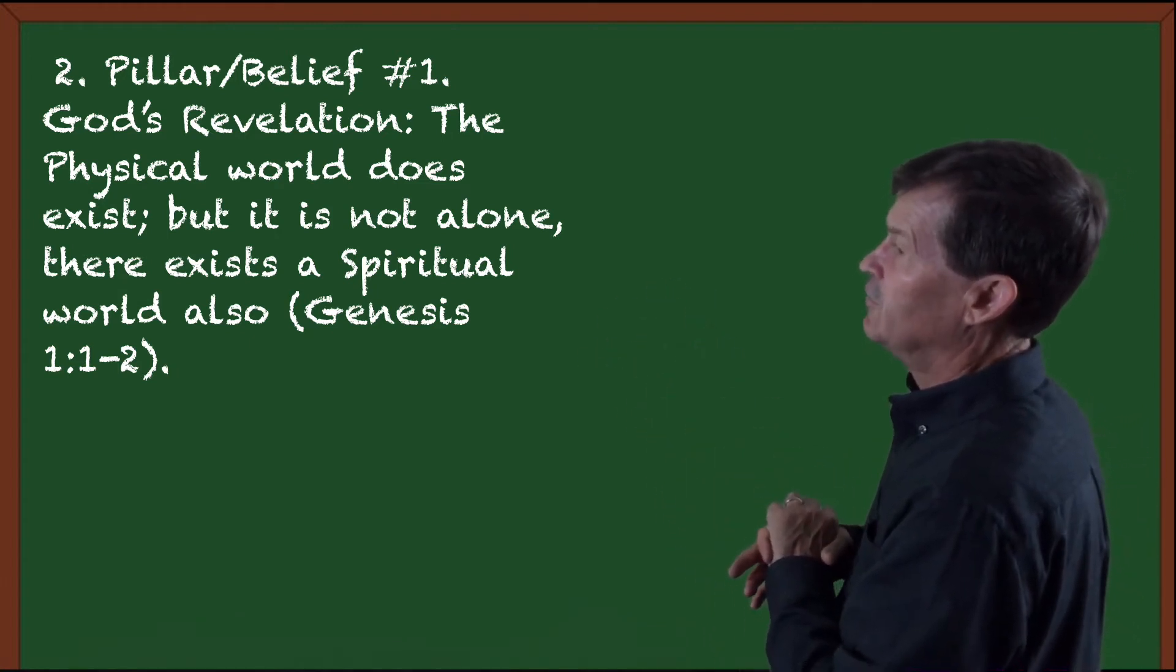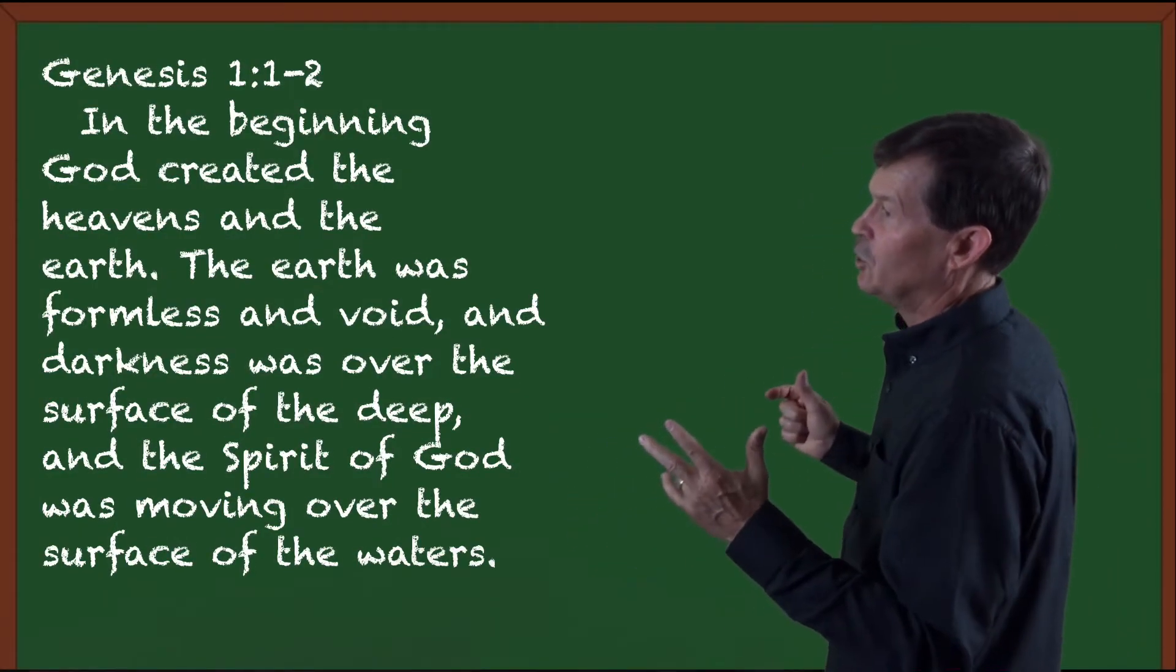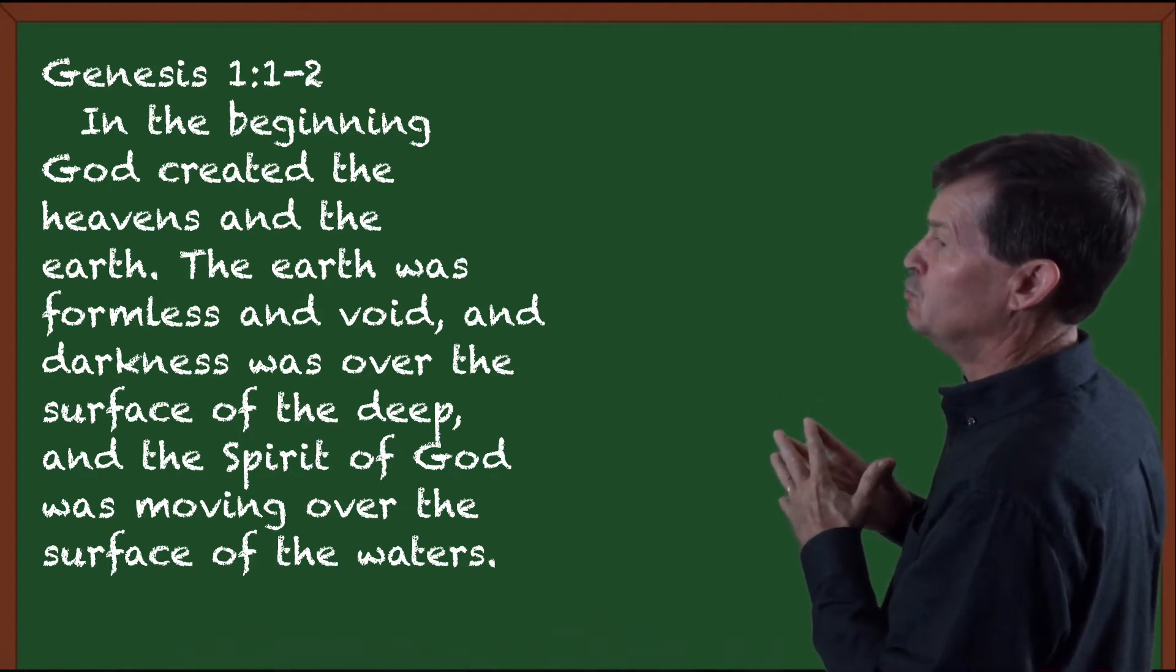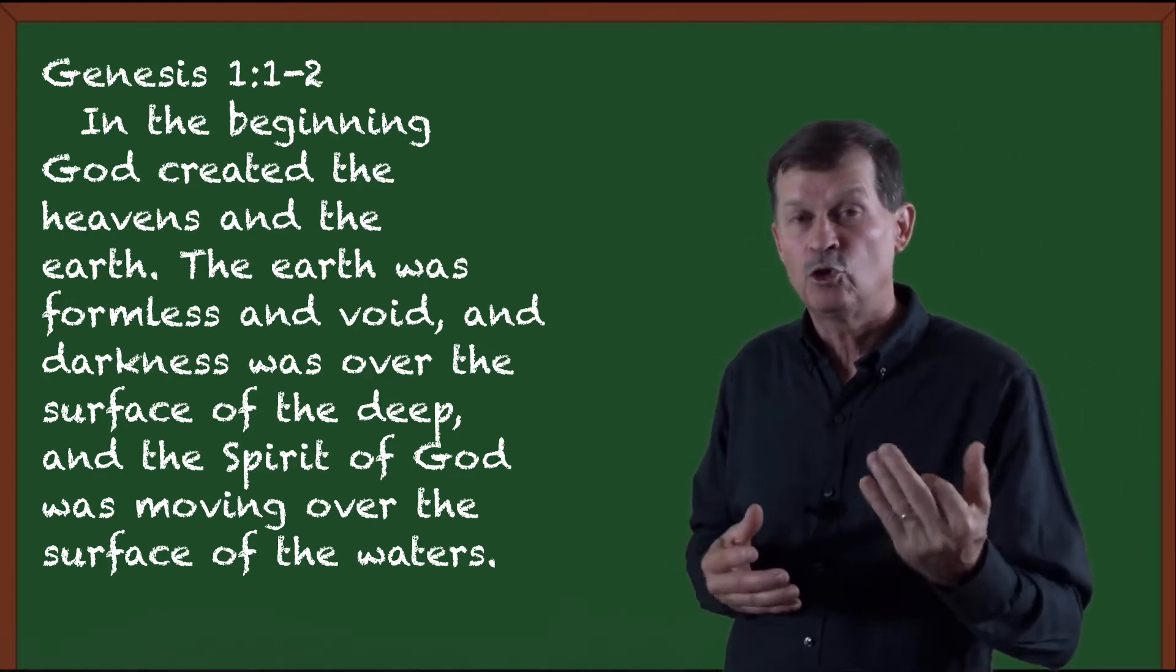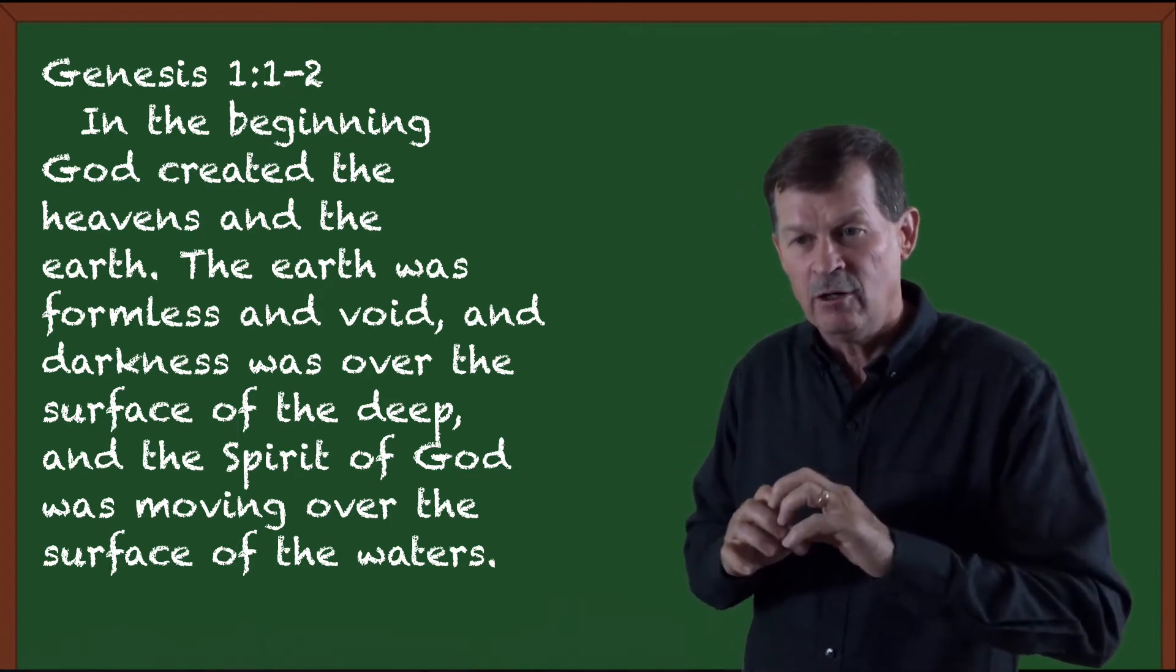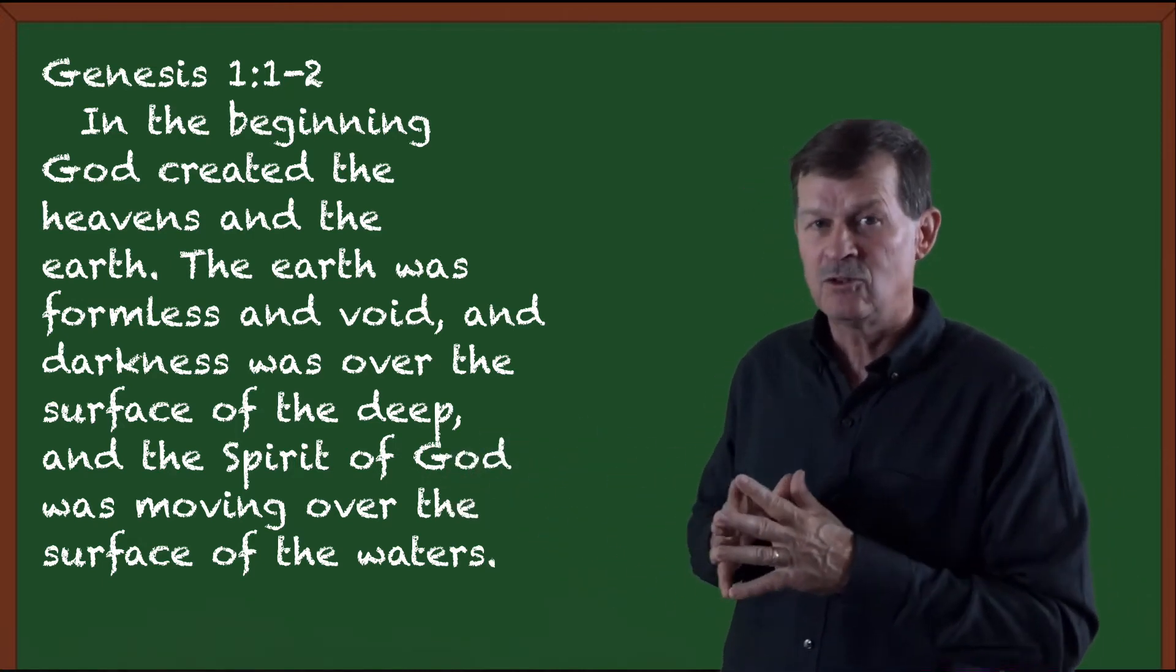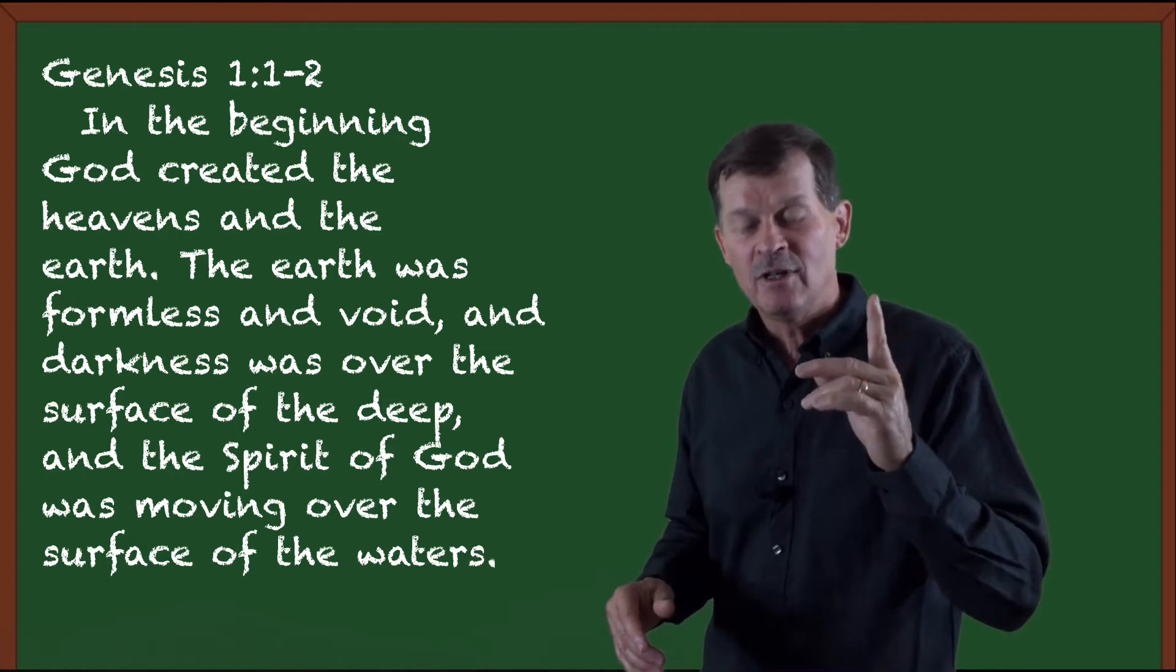In Genesis chapter one, verses one and two, that is what they base their beginning assumptions on. It reads: In the beginning, God created the heavens and the earth. The earth was formless and void, and darkness was over the surface of the deep. And the Spirit of God was moving over the surface of the waters. There we have a combination of the physical world being created and then ordered, but then the Spirit of God moved over the waters, which means that in this thinking, these are not two domains. They are one world that is physical and spiritual. So that is the first column.